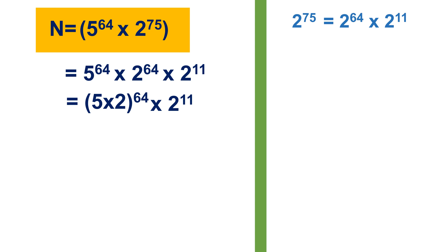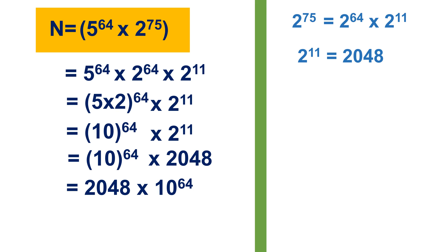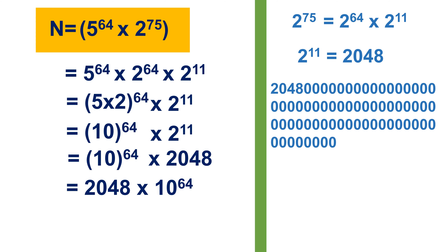The expression becomes 10 to the power 64 times 2 to the power 11. Now 2 to the power 11 equals 2048. So, keeping 10 to the power 64 as it is and replacing 2 to the power 11 with 2048, we can write this as 2048 times 10 to the power 64. What is interesting about this expression is that 10 to the power 64 denotes the number of zeros placed at the end of 2048.